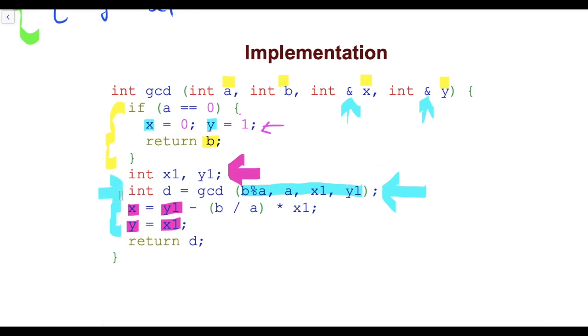After this step we know the value of x1 and y1, so by putting the value of x1 and y1 we can find the value of x and y. So this is the implementation of extended Euclidean algorithm.